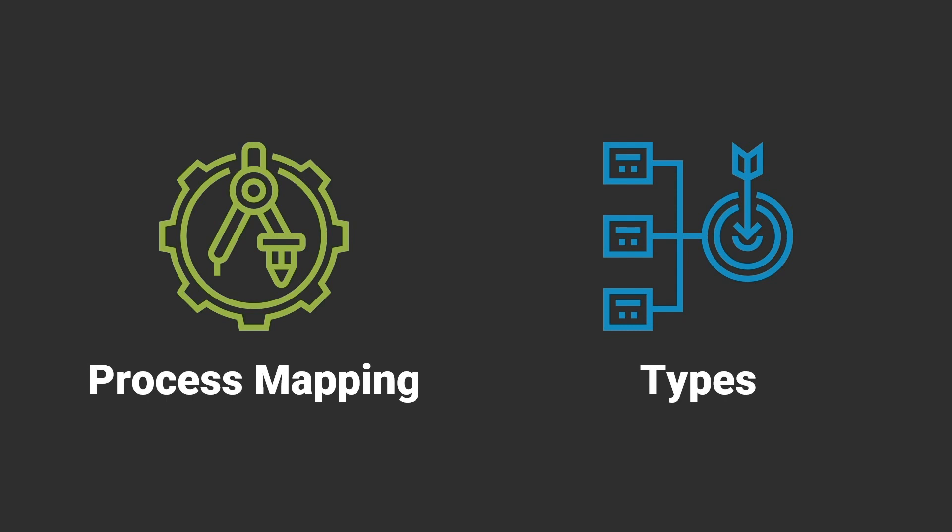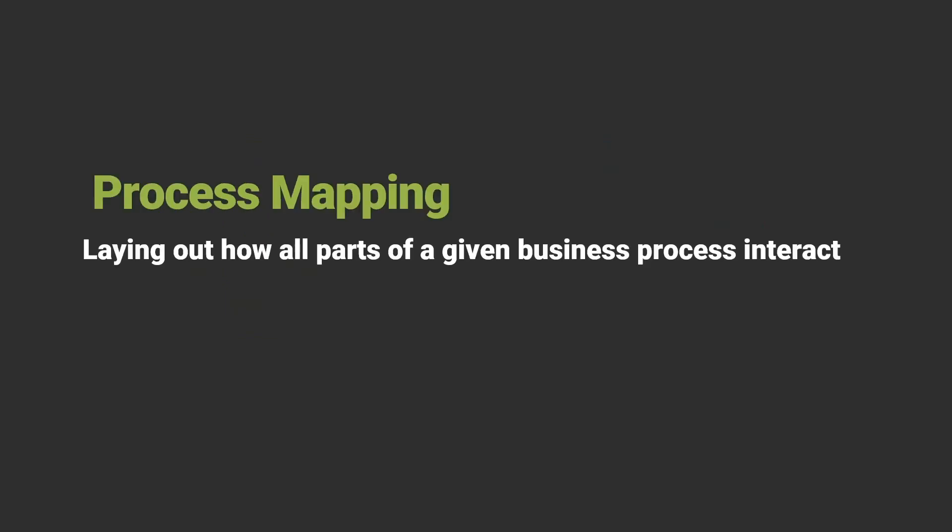We're going to talk about process mapping, then get into the different types of metrics you should consider. Process mapping is essentially just laying it all out — putting all the parts of a given business process on a map and seeing how they interact. This will help you figure out what metrics you need and how to improve that process.